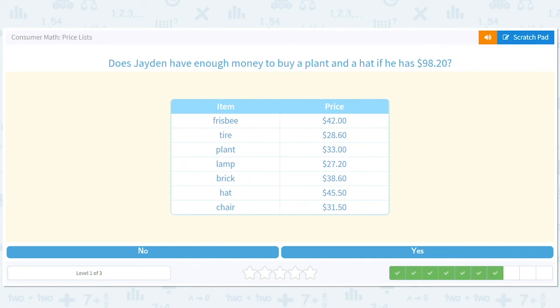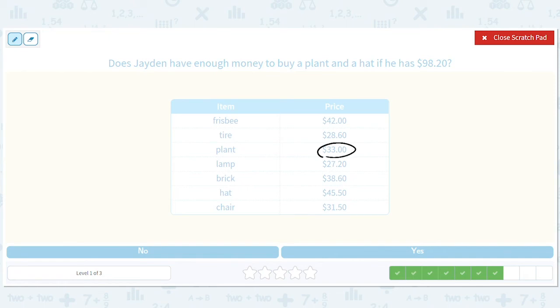Does Jayden have enough money to buy a plant and a hat if he has $98.20? So here's a plant, here's a hat. Let's just do some mental math here because that'll be practically useful. Even if we're really just conservative, we say the plant costs $40 and we're really cautious and we say the hat's going to cost $50, that's still only going to add up to $90. So he has $98.20, he has more than enough to buy a plant and a hat. So we're just going to go with a yes here.